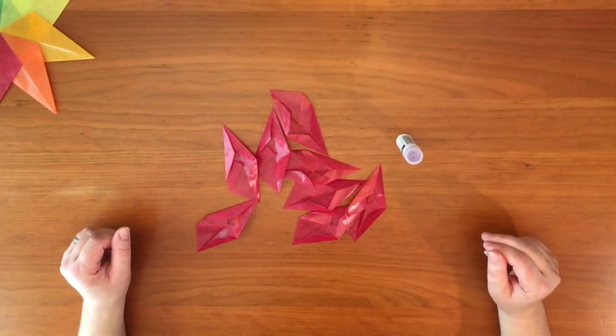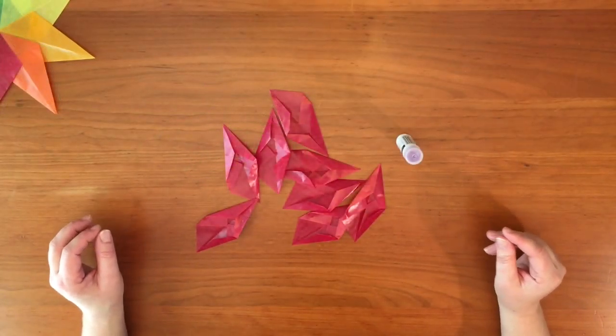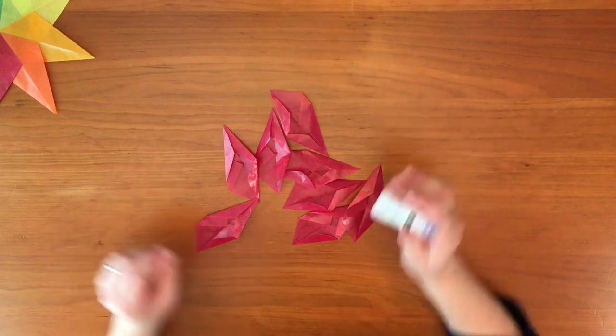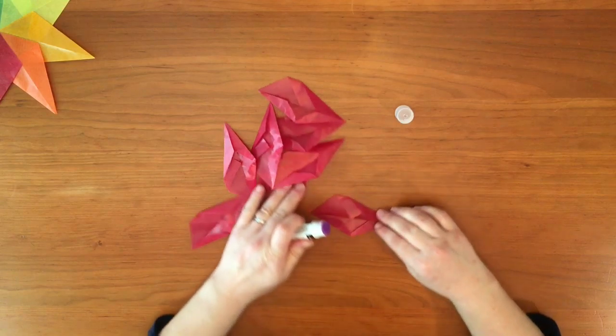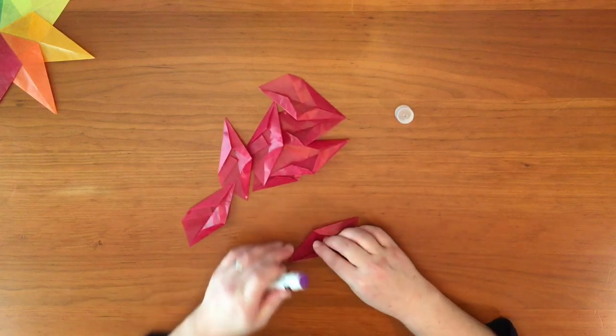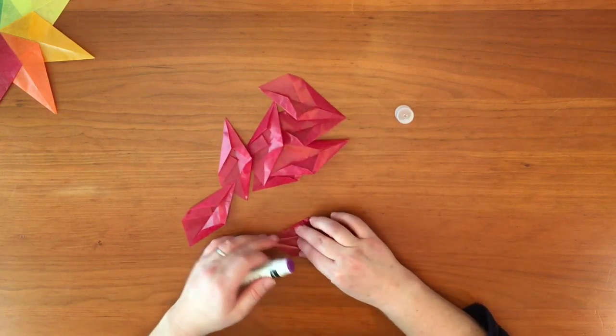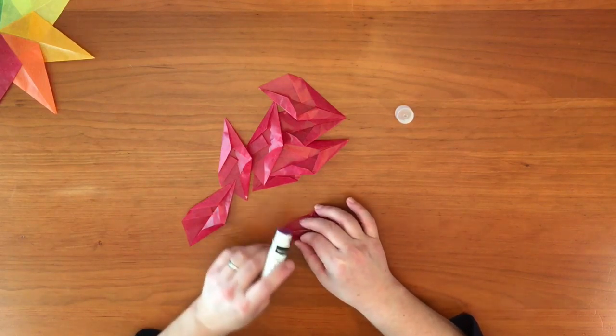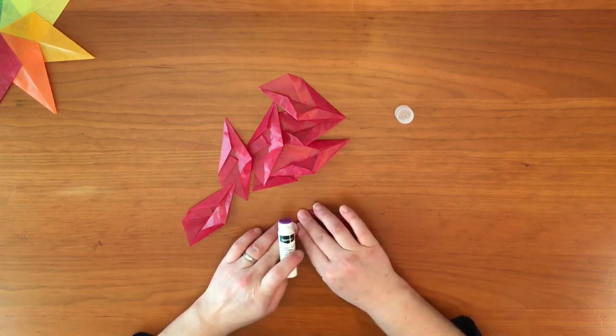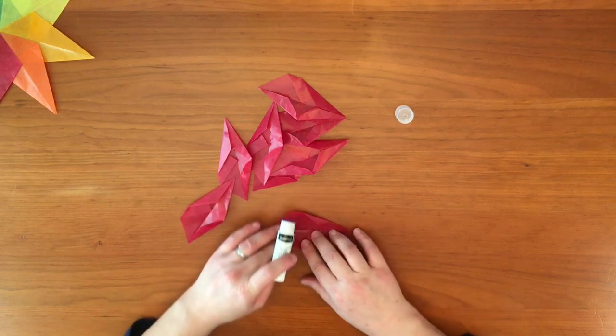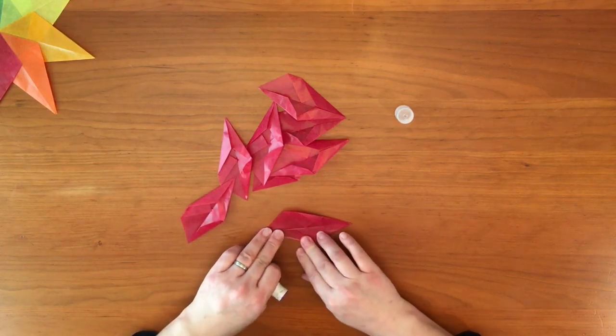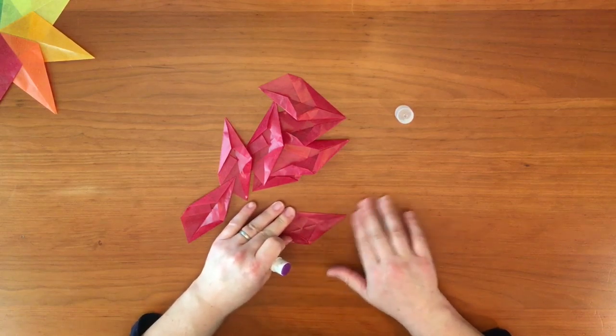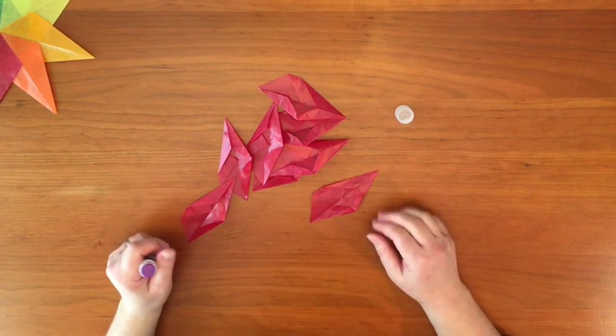Now we have all eight points of our star ready. This is a slightly more complicated fold, so I do recommend gluing your flaps down. We're going to start with these top flaps here. Just open them up a little bit, glue on the inside, and then press them down. We're going to do this bottom flap as well, and the same with the rest.